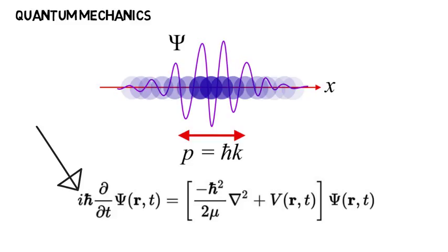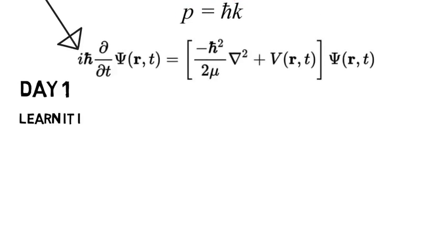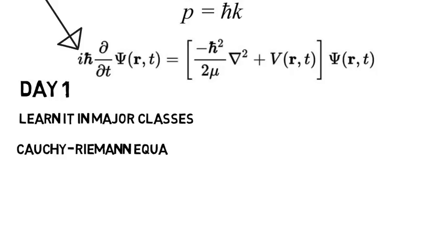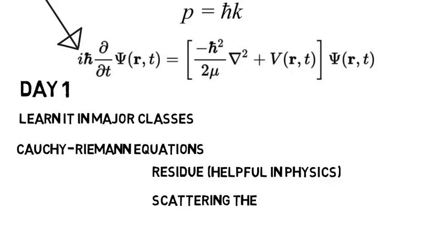So yes complex analysis can come up way more than you may realize but complex analysis also gets way more intense. Euler's formula is like day one and we didn't even scratch the surface. In fact you don't even need complex analysis to learn Euler's formula and as an electrical or maybe a computer engineer you will learn it in one of your major classes. But in complex analysis you can get into things you won't even hear of unless you take the class like Cauchy-Riemann equations or residue which is helpful in physics to evaluate certain integrals like in scattering theory which is how waves and particles scatter.